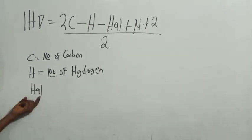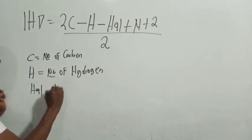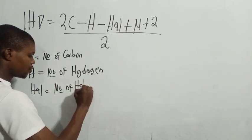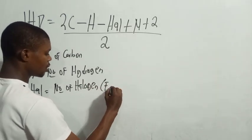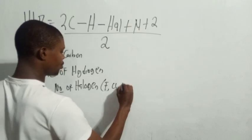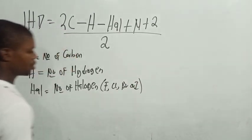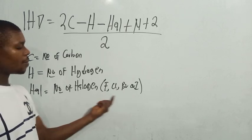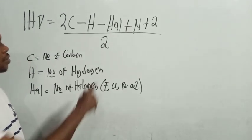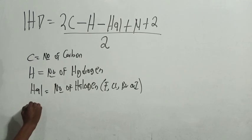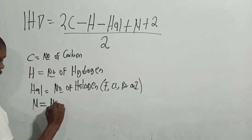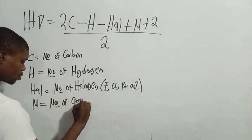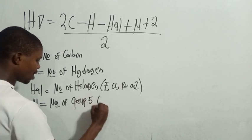The X in the formula represents the number of halogens. The halogens can be fluorine, chlorine, bromine, or iodine. The number of all these halogen elements in the compound counts as X. N means the number of group five elements.